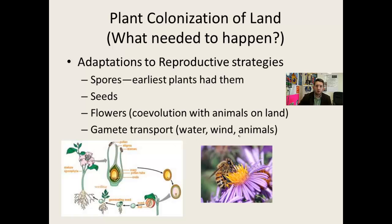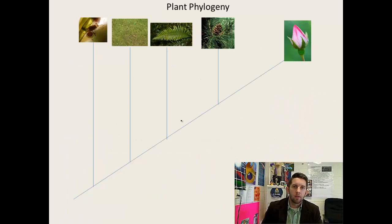Plants always had water and wind for pollen dispersal, but now with animals, perhaps they can travel over longer distances. These reproductive strategies — seeds and gamete transport — were very important for the evolution of plants, making them more diverse and more complex in their phylogeny.